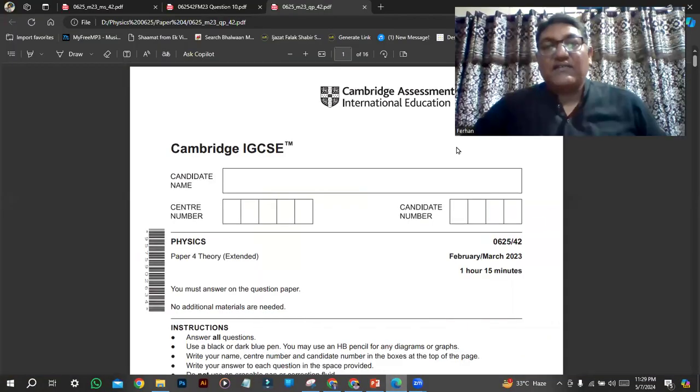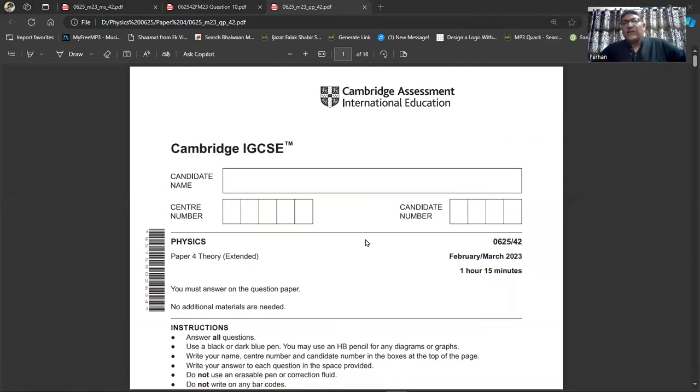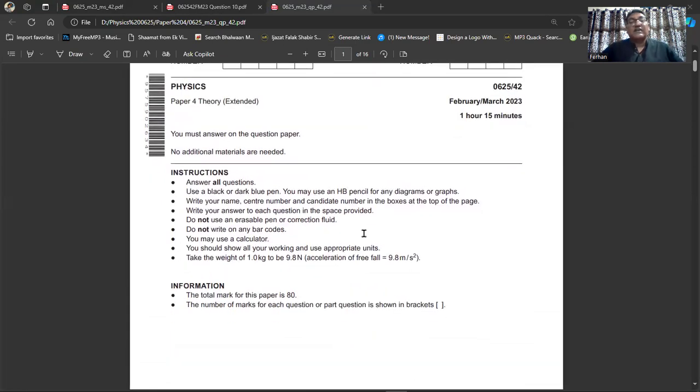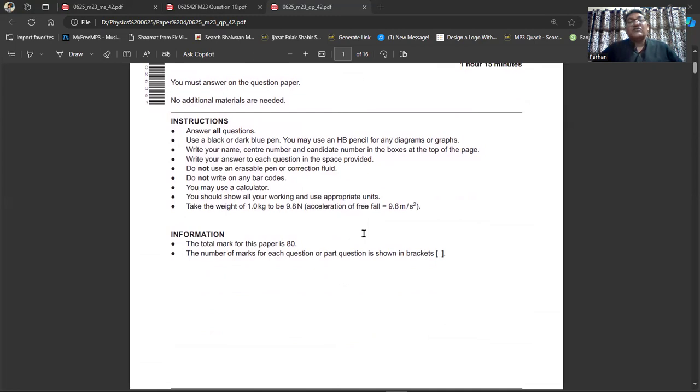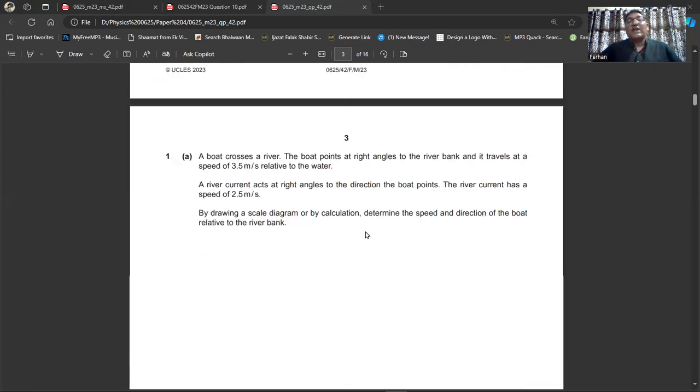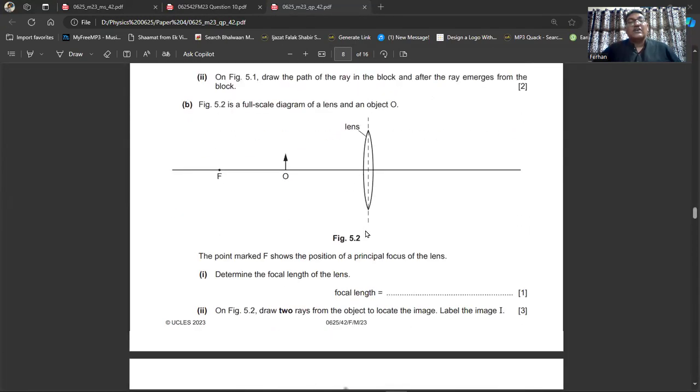Here we have that paper. This is February-March 2023, 0625/42. This is physics paper four, extended. The time allotted for this whole paper was 1 hour 15 minutes. The total marks for this paper are 80. The g-value is taken as 9.8 meters per second square. But we are going to attempt only question number 10 of this paper.